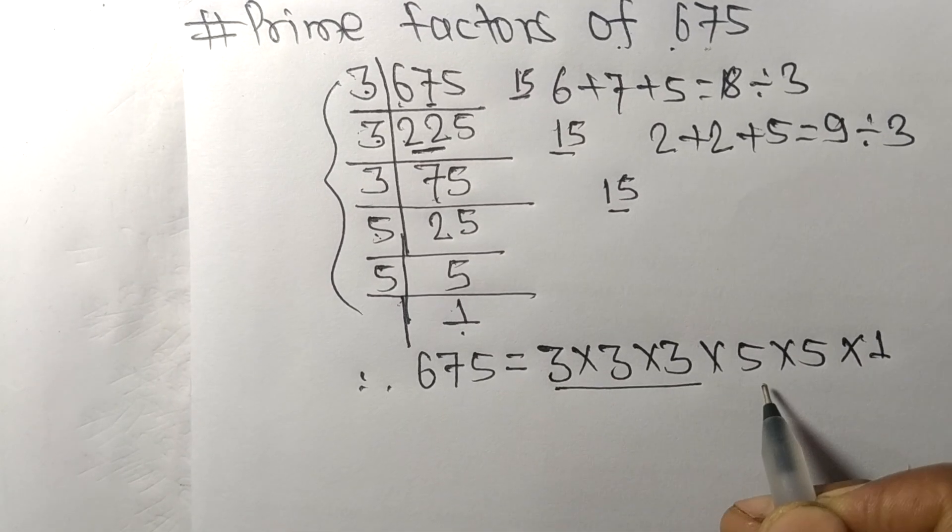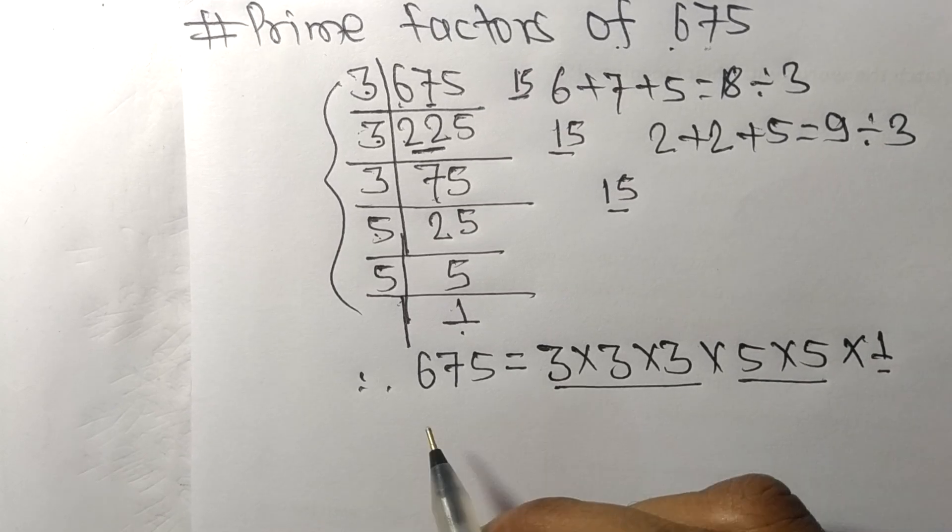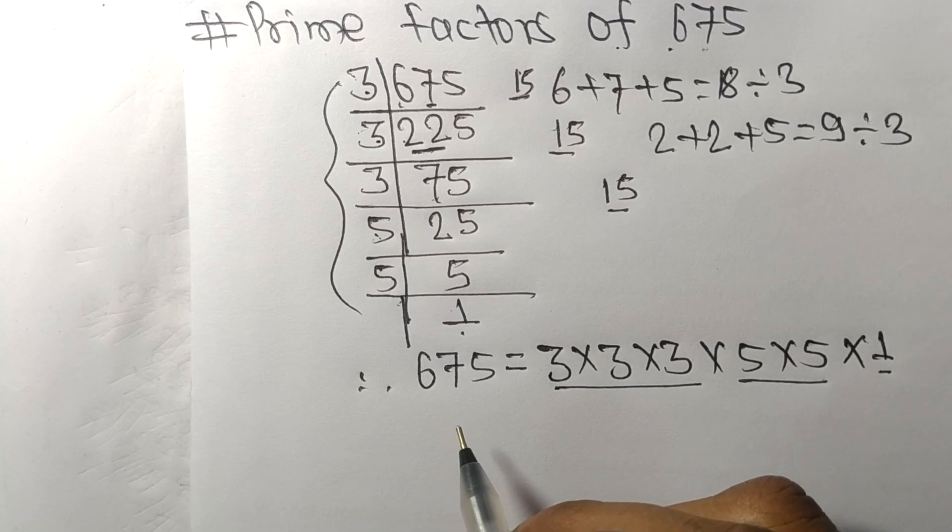So 3, 5, and 1 are the prime factors of 675. That's all for today, and thanks for watching.